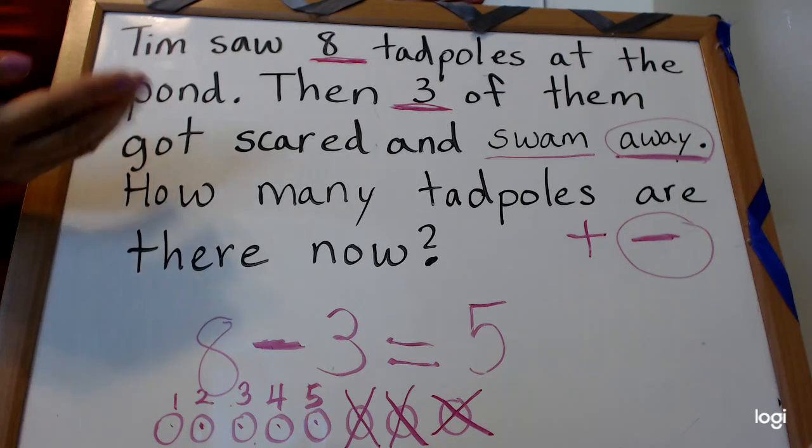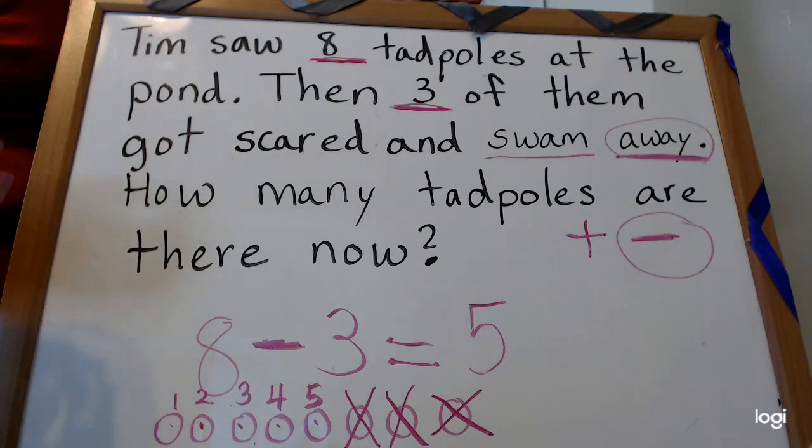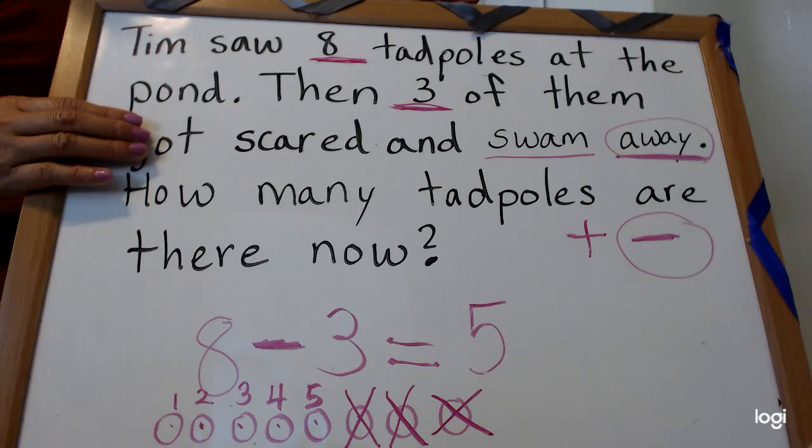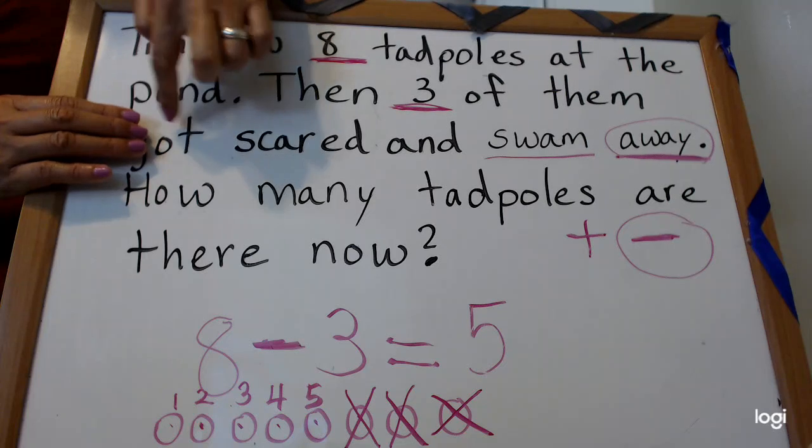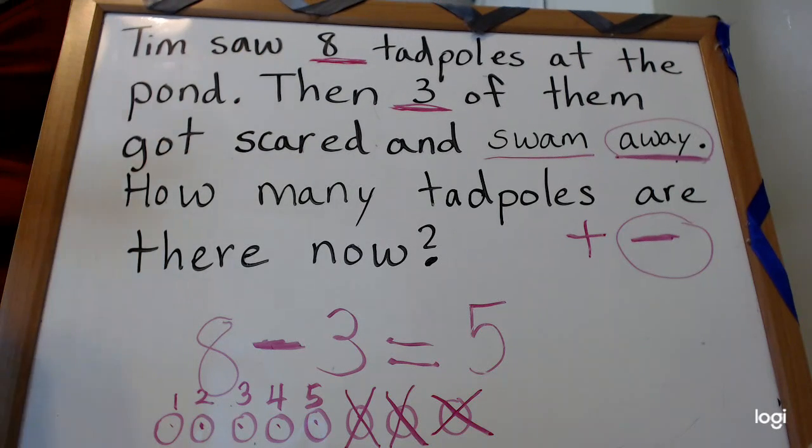This is one of your power words, 'got', but if you don't know it you can solve it. You can solve it until you learn it. Cover the G, the G sound. You see the 'ot'. G-ot, 'got'.